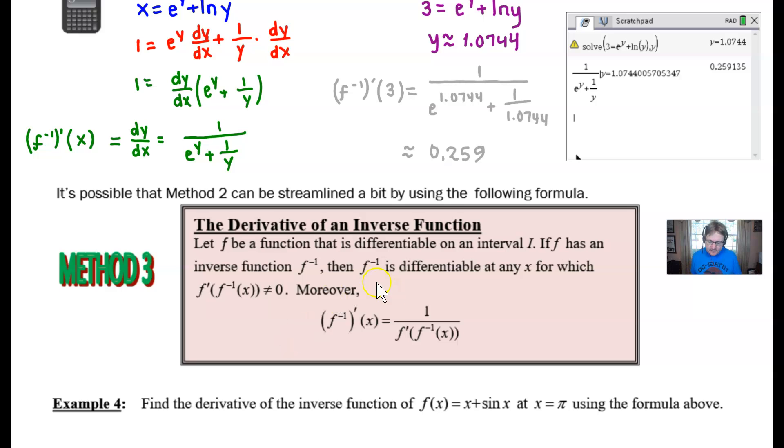Basically, it says that you've got a function f differentiable on some interval. If f has an inverse function f inverse, then f inverse is also differentiable for any x, and we also realize that f prime of f inverse of x can't be zero. And that leads us to this particular formula. The reason why that statement had to be made is we have to make sure that this denominator is not zero. So let's just go ahead and dive right into example four.